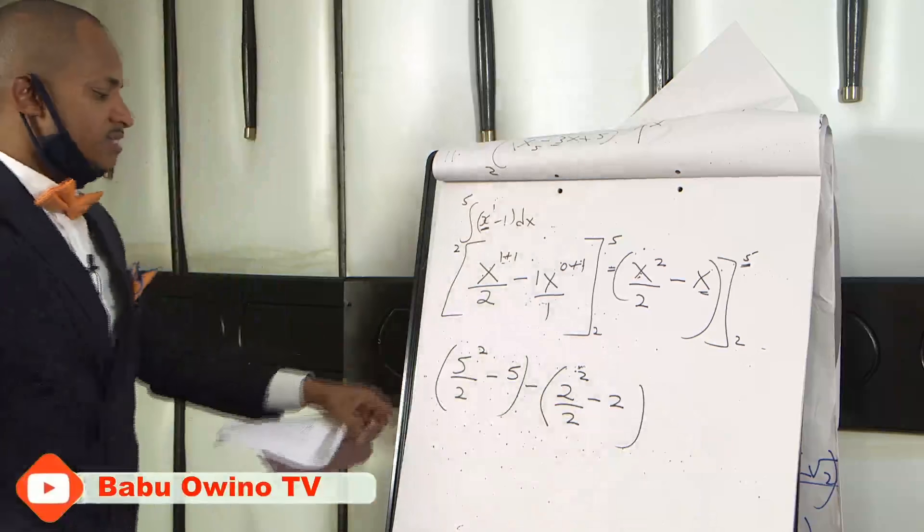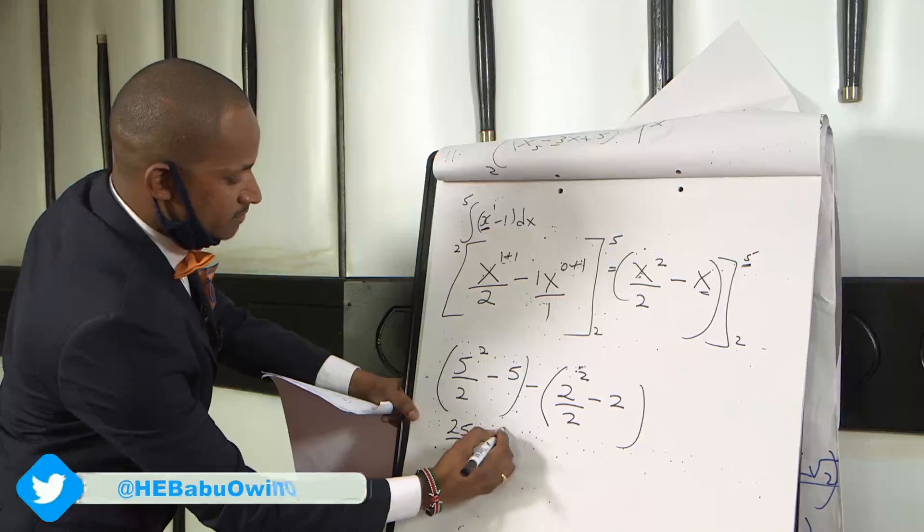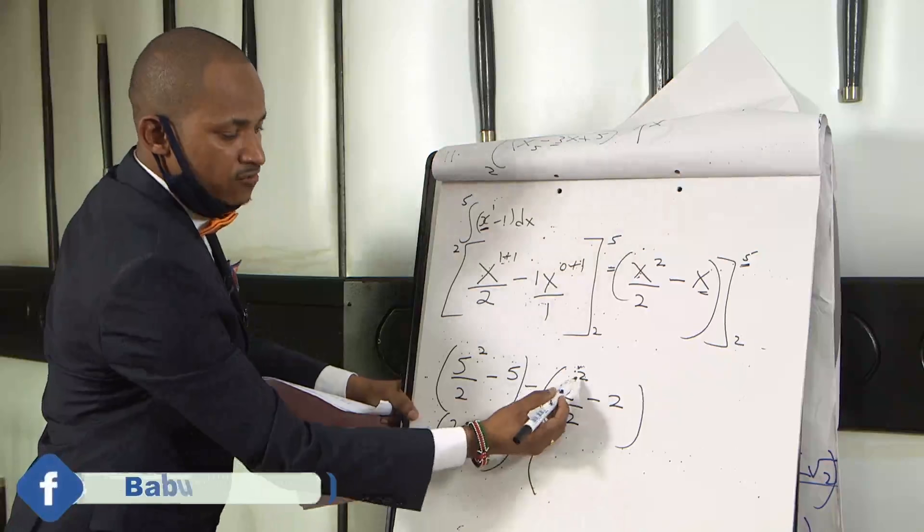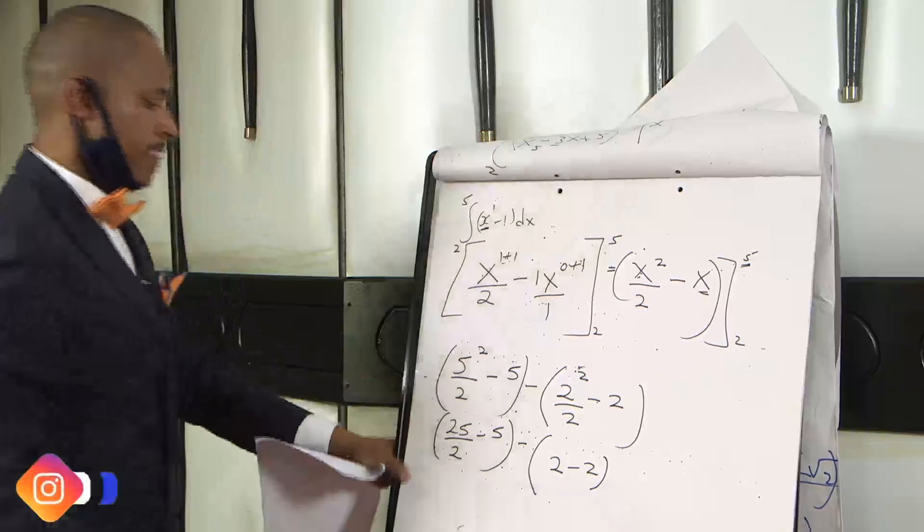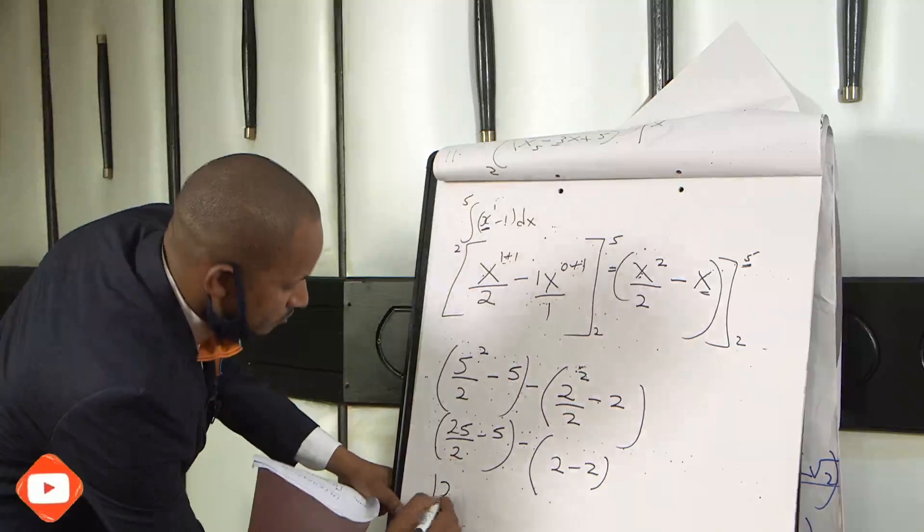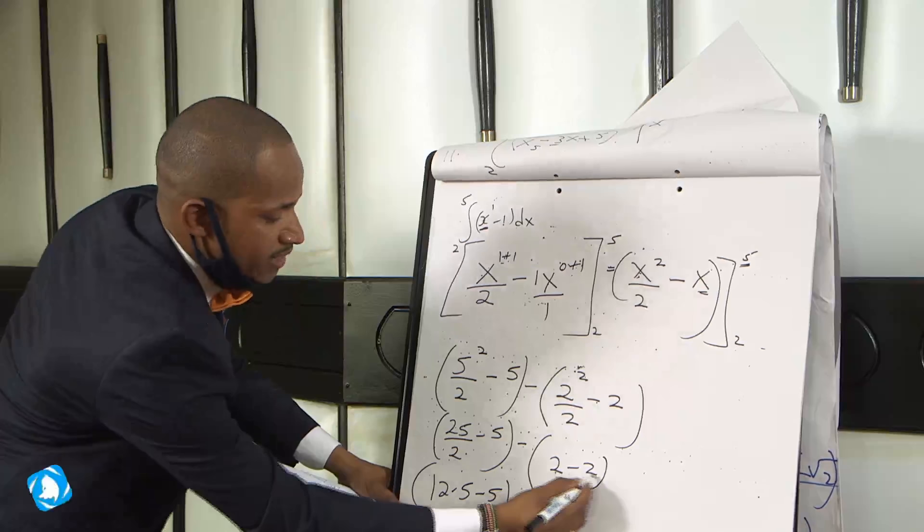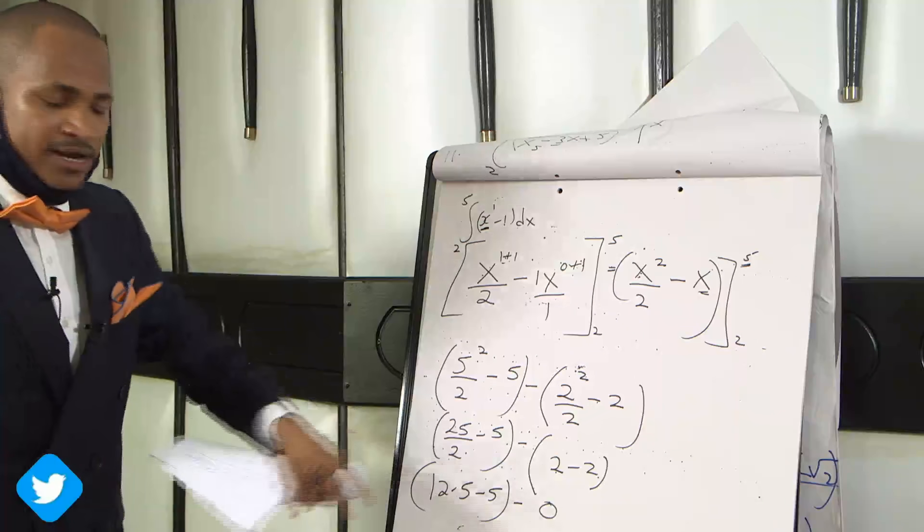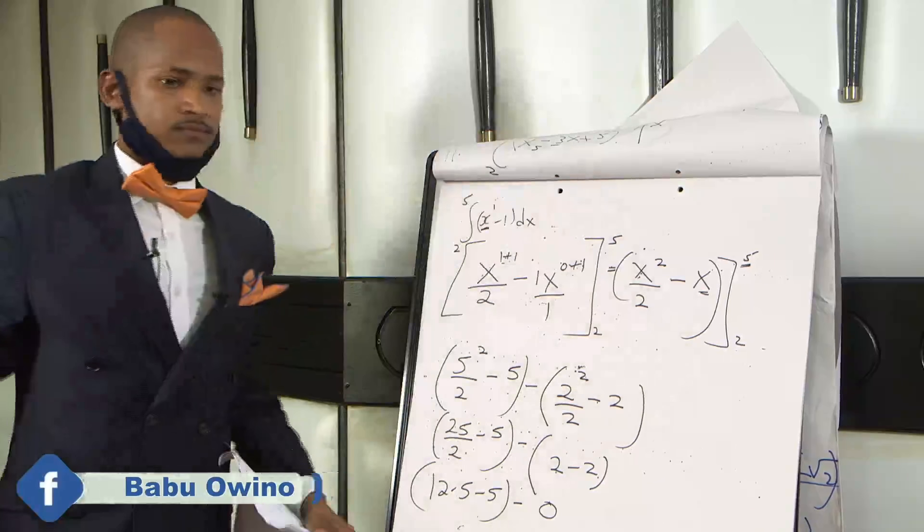You open this up. 5 squared is 25 from your calculator, divided by 2, minus 5, minus 2 squared is 4. 4 divided by 2 is 2, then minus 2. 25 divided by 2 is 12.5, so 12.5 minus 5 minus 2 minus 2 is 0. Therefore 12.5 minus 5, you get 7.5. That is the value.